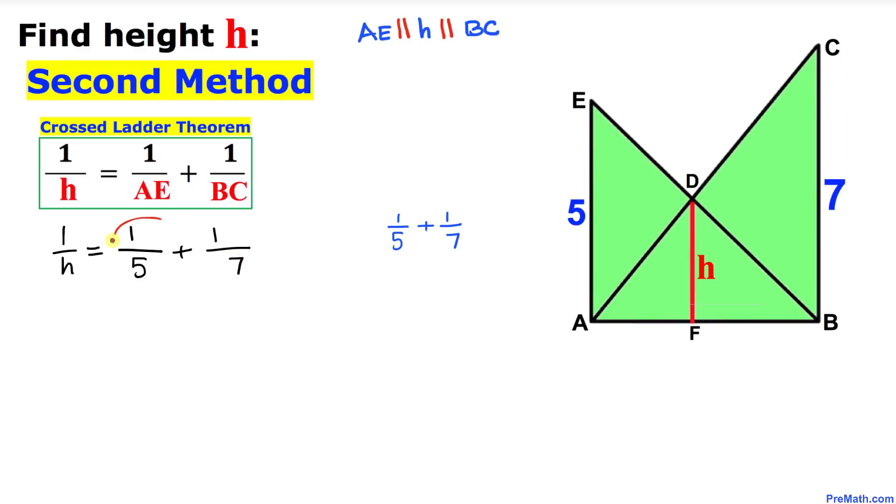Now let's focus on the right hand side fractions. Let me show you how to add these two fractions. Let's crisscross: 7 times 1 is 7, then we have the plus sign, and 1 times 5 is 5, divided by 5 times 7 which is 35. So we got 12 over 35. So our 1 over H equals 12 over 35.